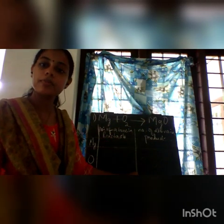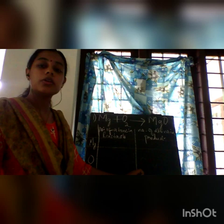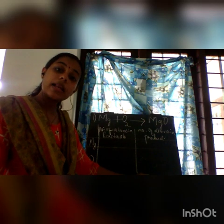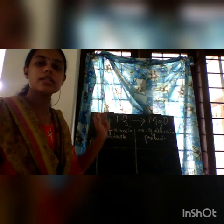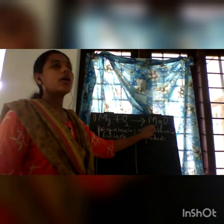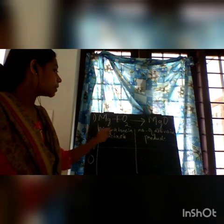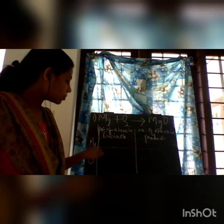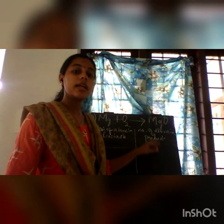For example: Mg plus O2 gives MgO. First, find what elements are present in the reactants and products. Here there are two elements: Mg and Oxygen. In the product MgO, Mg and Oxygen are also present. Now find the number of atoms in the reactants: number of Mg atoms and number of Oxygen atoms, then number of Mg and Oxygen atoms in the product.